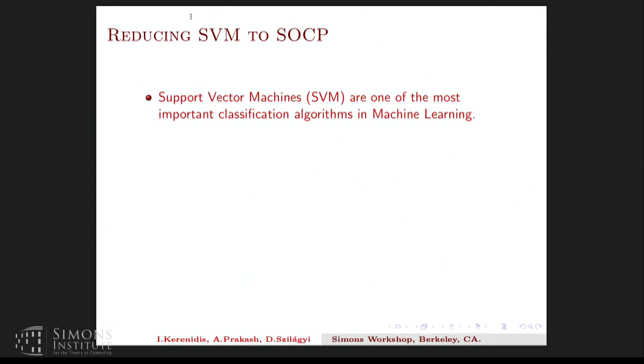So one of the most important problems that reduces to SOCPs is the support vector machine problem in machine learning. So let me see what this problem is and how it reduces to the SOCP briefly. So the SVMs are one of the most important classification algorithms in machine learning. So the input to the SVM is a training set of vectors X_i, which are the data points, and the labels Y_i. So the SVM is formulated as a convex QP, where the objective function is to minimize this weight vector plus regularization term.